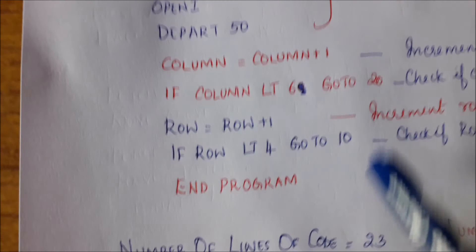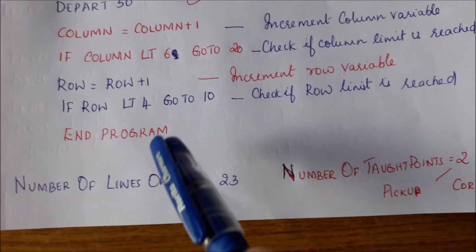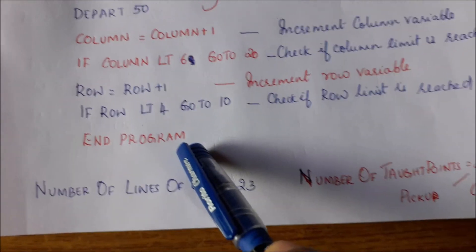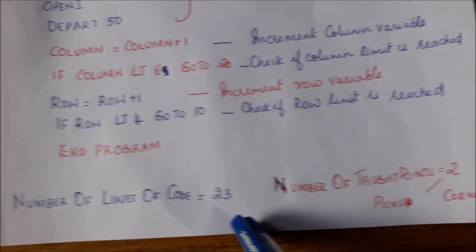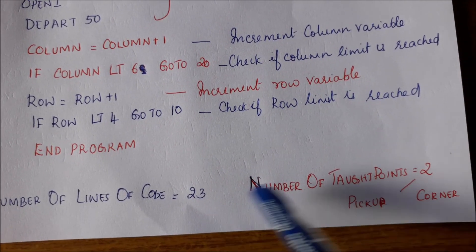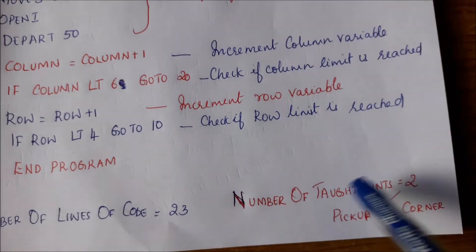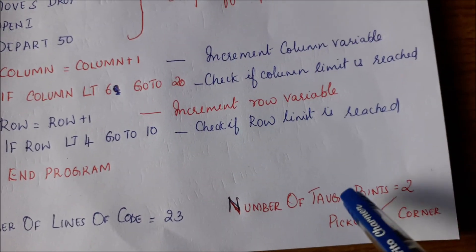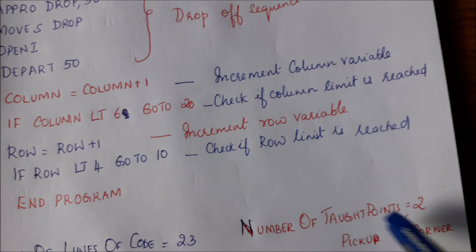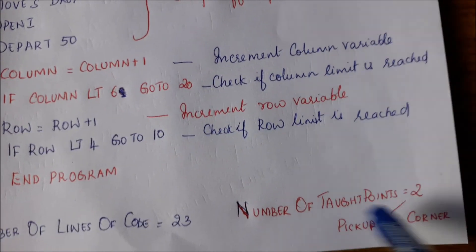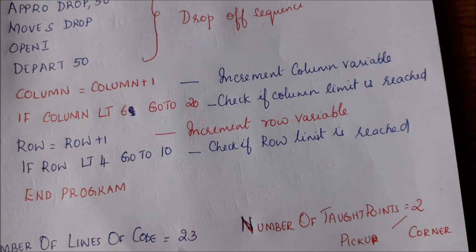We keep repeating this process until all parts have been placed, then end the program. The number of lines of code in this program is only 23, and the number of taught points is just 2 — pickup and corner. This is a dramatic reduction from the previous approach, which required 89 lines of code and 27 taught points.